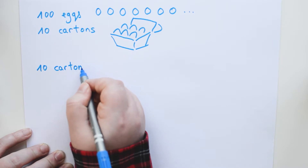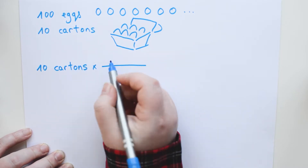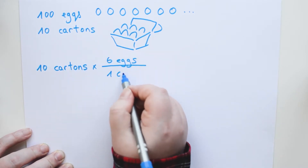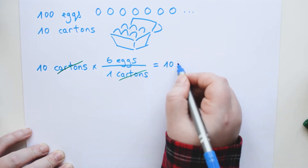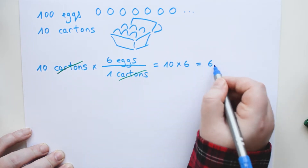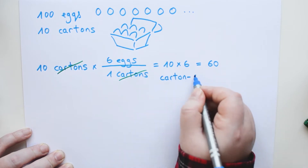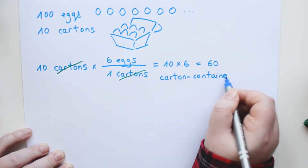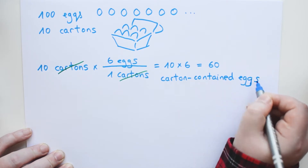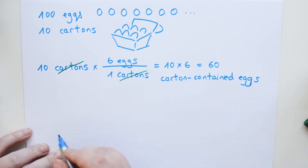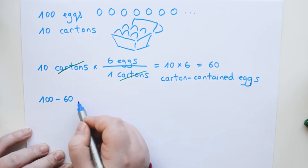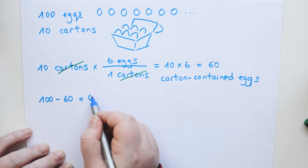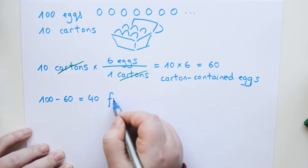So you do some math. First, you want to figure out how many eggs are inside cartons: 10 cartons times 6 eggs per 1 carton. Cartons cancel each other out, and we do the top and bottom math separately, so that equals 60 eggs inside cartons. Now you know the total eggs, which is 100, and the carton-contained eggs, which is 60, and you deduce the remaining eggs are free eggs: 100 minus 60 equals 40. And now you're like, oh no — 40 free eggs, it's gonna be a mess!